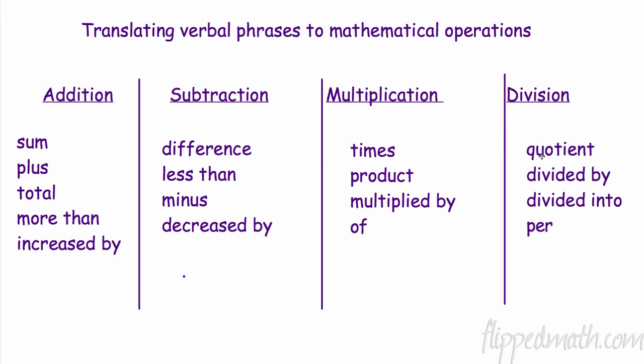Division. Quotient is the answer to a division problem. Divided by, divided into, obviously. But per is a really big one. For example, miles per hour, you would take the miles and divide it by the hours. So that is division. Per is a big one in the real world.